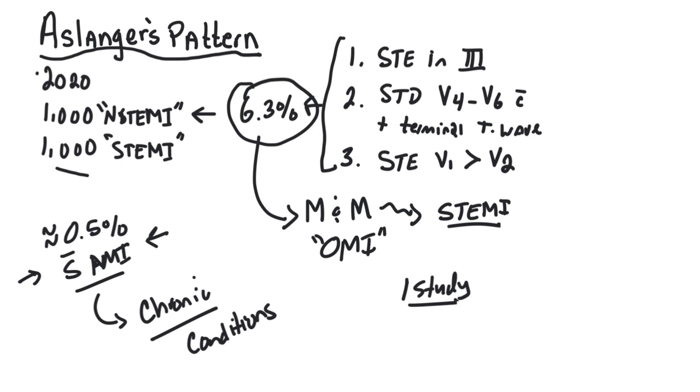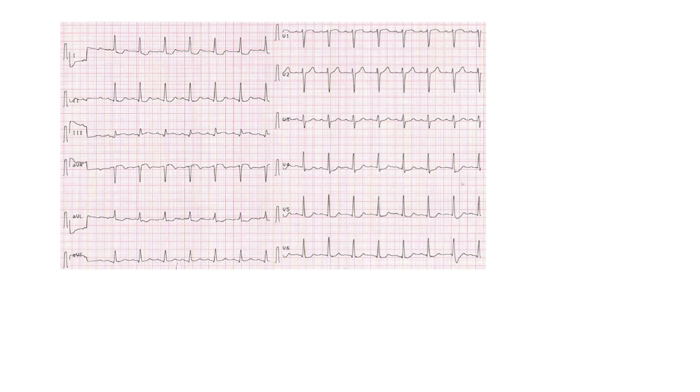Okay, so let's take a look at the Aslanger pattern, and let's just go ahead and take a look at an ECG of this pattern. So here we have an ECG. So again, the major findings are going to include ST elevation in lead 3.